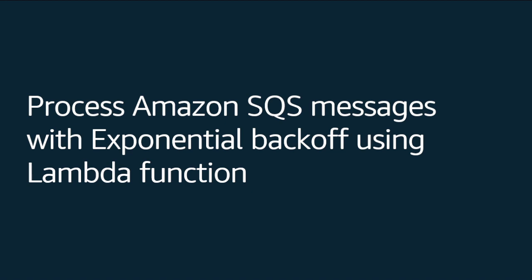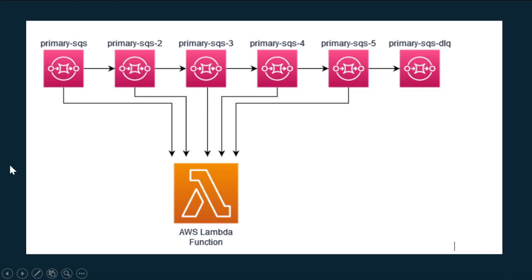This is my strategy to implement exponential backoff. Recently when I was working on an assignment where I was reading messages from SQS, I needed to implement exponential backoff. I did some POC and figured out there are many ways, but this is one way where you don't need to do any code changes in your existing Lambda function implementation.